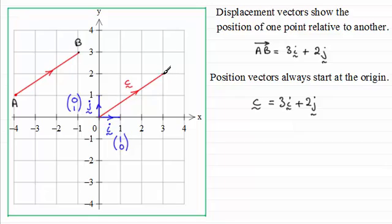Now if I put at this end here, let's say capital C, then I could say that OC was the vector 3i plus 2j.